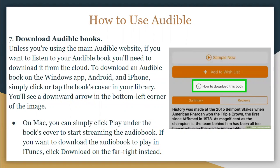Unless you're using the main Audible website, if you want to listen to your Audible book you'll need to download it from the cloud. To download on the Windows app, Android, and iPhone, simply click or tap the book's cover in your library — you'll see a downward arrow in the bottom left corner. On Mac, you can click Play under the book's cover to start streaming, or click Download on the far right to download it for iTunes.